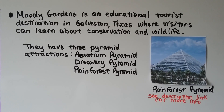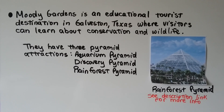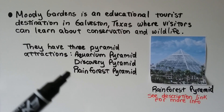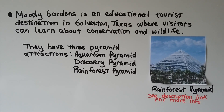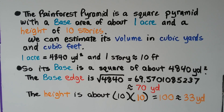Moody Gardens is an educational tourist destination in Galveston, Texas, where visitors can learn about conservation, wildlife, and even endangered species. It has three pyramid attractions: the Aquarium Pyramid, the Discovery Pyramid, and the Rainforest Pyramid. The Rainforest Pyramid is a square pyramid with a base area of about one acre and a height of 10 stories. We'll estimate its volume in cubic yards and in cubic feet.